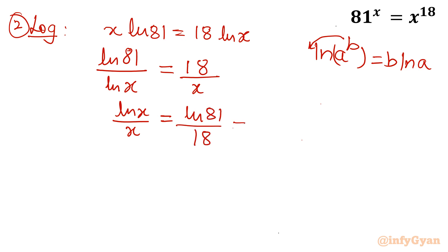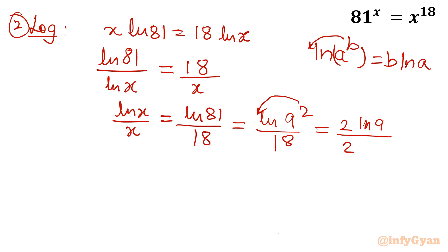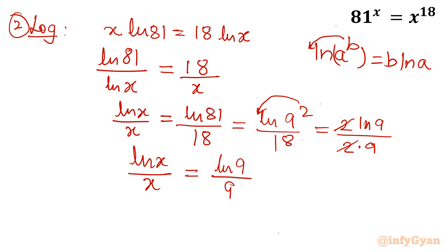Simple. Now 81 can be written as 9 squared, so ln 81 equals 2 ln 9. The right-hand side becomes 2 ln 9 over 18. Cancelling the 2 from numerator and denominator, ln x over x becomes equal to ln 9 over 9. Simply by comparing both sides, we conclude x must be equal to 9.